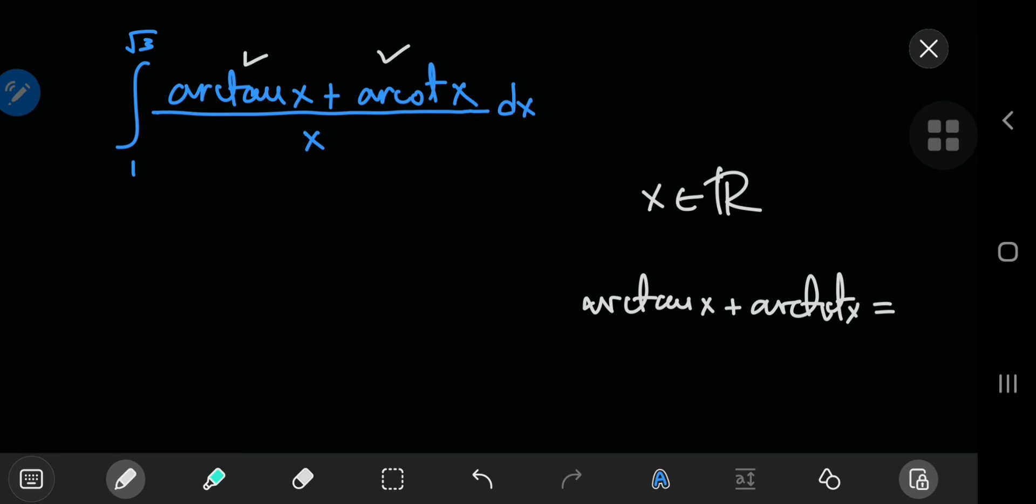This is something I learned in high school and you can verify it using a graph. If you add up the inverse tangent and inverse cotangent of some real number, you get pi by 2. You can verify that on a graphing calculator like Desmos. If you plot the graphs of inverse tangent and inverse cotangent of x, you just get a horizontal line that cuts the y-axis at pi by 2.